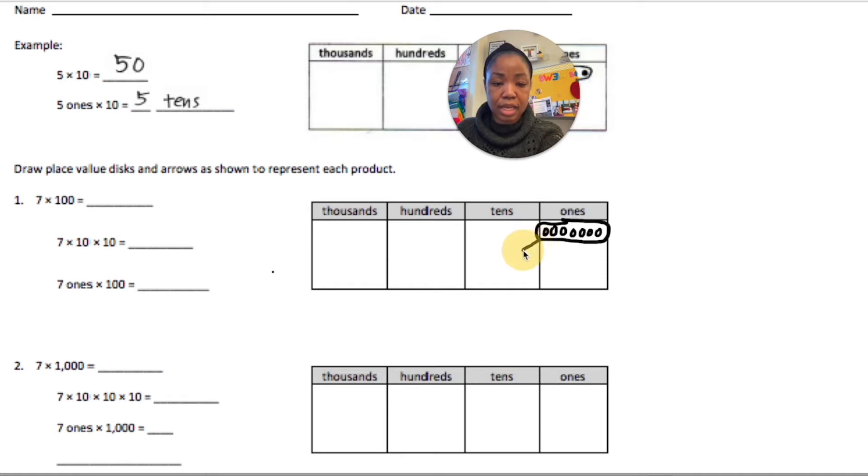100 is times 10, 2 times. So I'm going to do times 10. That will put 7 in the tens. But since we're doing times 100, it would be times 10 again. So we've moved 2 place values. So 7 times 100 is 700. That's 7 times 10 times 10, which is 700.